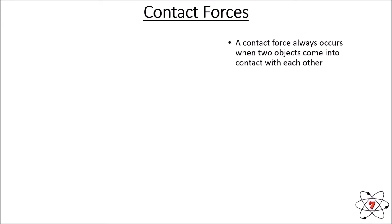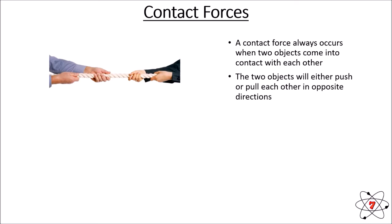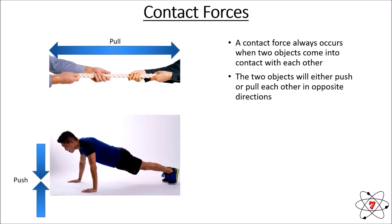Contact forces occur when two objects interact while touching each other. The two objects can either push each other or pull each other in the opposite direction — remember, forces always act in pairs and in opposite directions. Here we can see two people pulling on a rope; they're in contact with the rope, so this is a contact force. We can also have pushing forces — here this person is doing a push-up, pushing down on the ground, but the ground is pushing up on them.